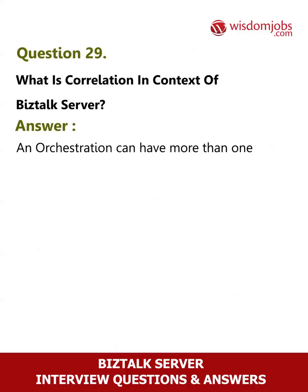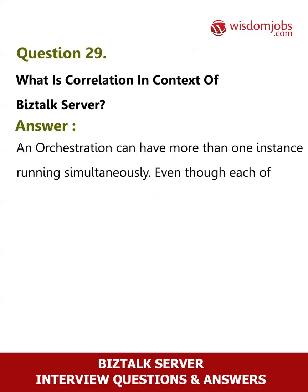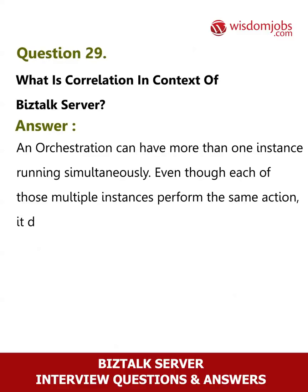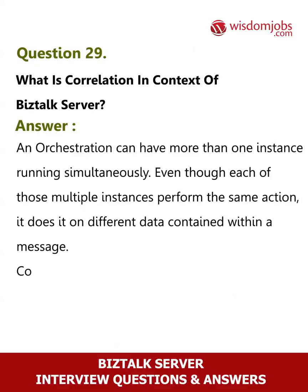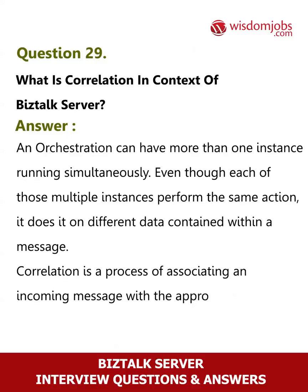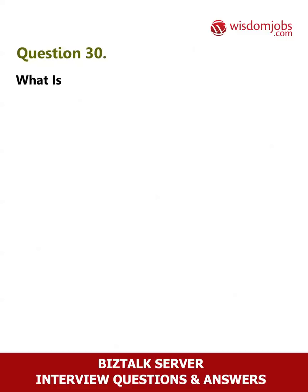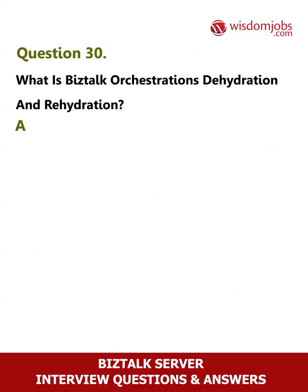Question 29: What is correlation in the context of BizTalk Server? Answer: An orchestration can have more than one instance running simultaneously. Even though each of those multiple instances performs the same action, it does so on different data contained within a message. Correlation is the process of associating an incoming message with the appropriate instance of an orchestration.